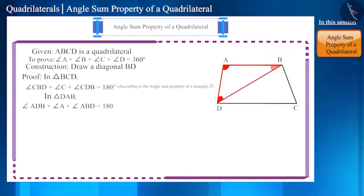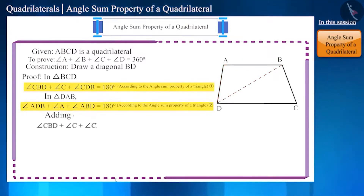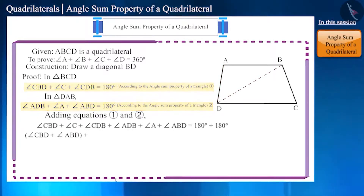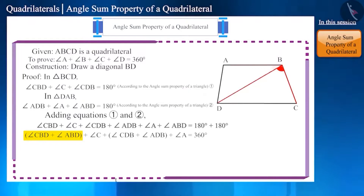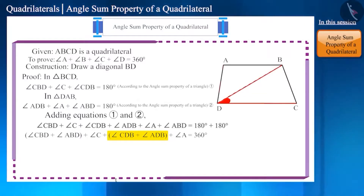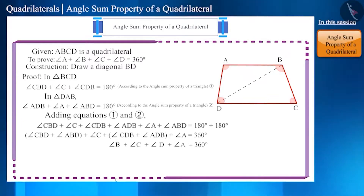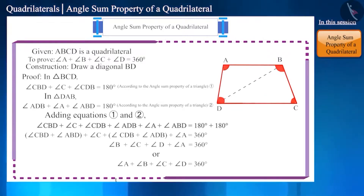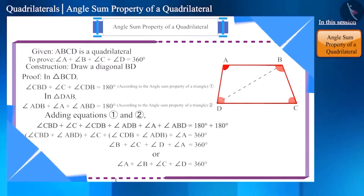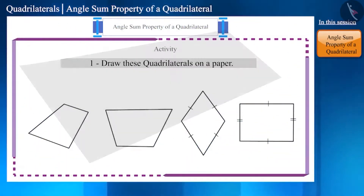Similarly, in triangle DAB, angle ADB plus angle A plus angle ABD equals 180 degrees. Adding equations one and two, when we add angle CBD and angle ABD we get angle B, and similarly adding angle CDB and angle ADB we get angle D. We can write it as angle B plus angle C plus angle D plus angle A equals 360 degrees, or angle A plus angle B plus angle C plus angle D equals 360 degrees. Thus we prove that the sum of the four angles of any quadrilateral is 360 degrees.